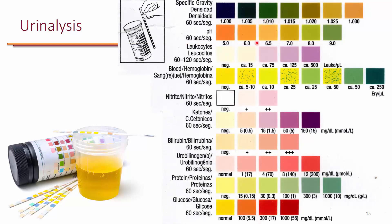You don't need to memorize the color chart; it's just for your information. Based on the color change, the lab will report the results of the UA. For example, one thing they look for is the presence of nitrite — they'll tell you if it's negative, borderline positive, or definitely positive. Similarly for glucose, if it's a certain color for that test, they would say it's normal.